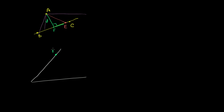And let's call this point C right over here. An angle bisector is essentially a line, segment, or ray that splits an angle into two equal angles.